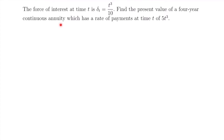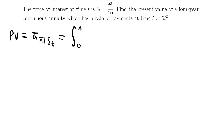Find the present value of a four-year continuous annuity which has a rate of payments at time t of 5t³. This will require a different formula. The present value equals the notation a-bar angle n at delta_t, which equals the integral from 0 to n of e to the power of the negative integral from 0 to t of delta_t dt, all times dt for the outer integral. When we have a continuous annuity defined with a force of interest delta_t, this is the formula we use.